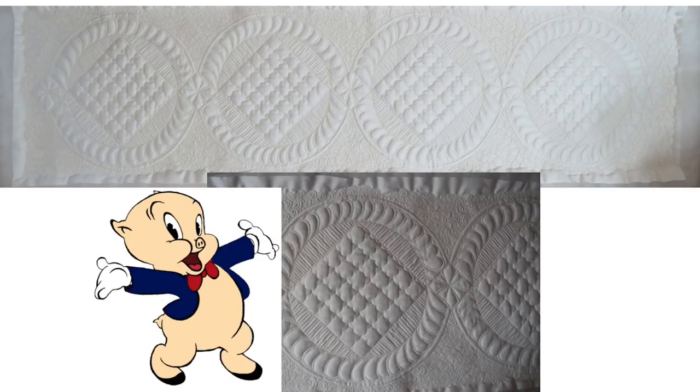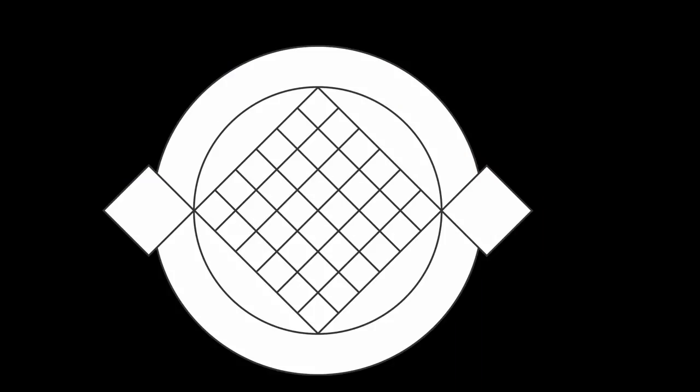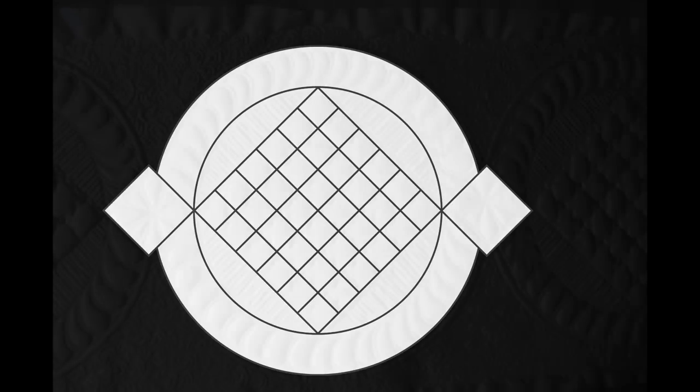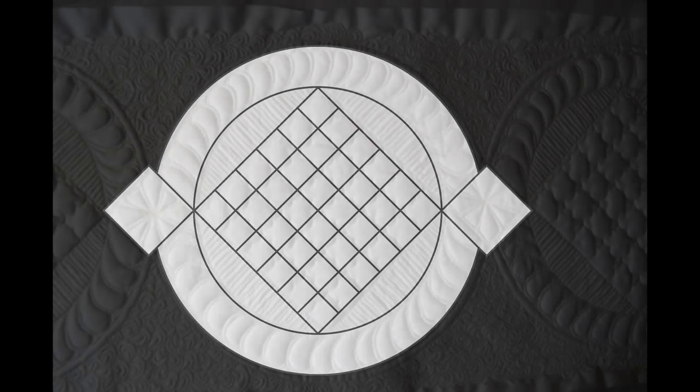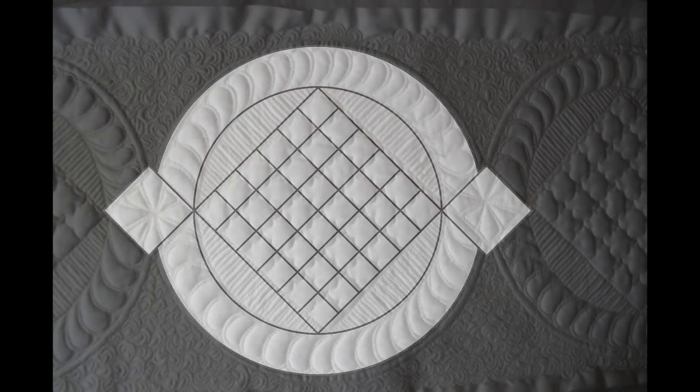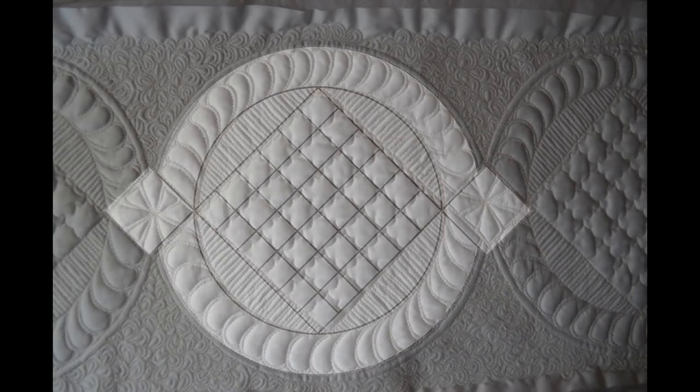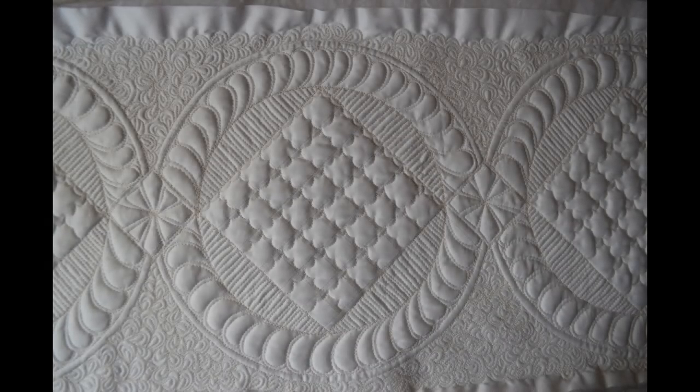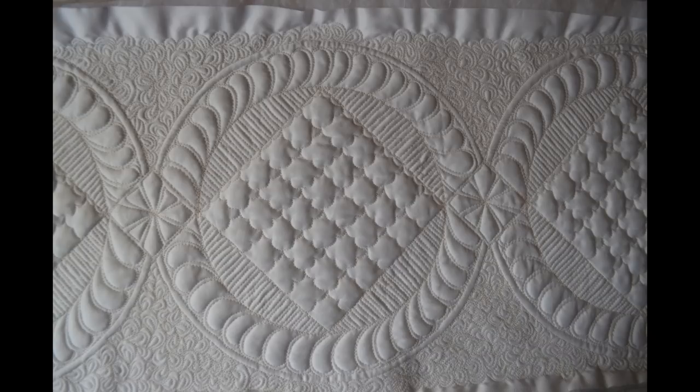Well folks, as Porky Pig says, that's all folks. This is how you take a plain design made up of a square, some circles, and a diamond, and turn it into a beautiful row of gorgeous stitching. I can't wait to see what you come up with. Make sure you share.